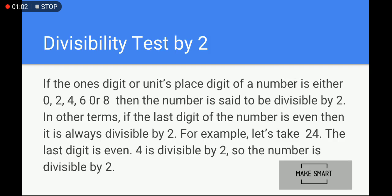First, we will test divisibility by two. If the unit place digit of a number is either 0, 2, 4, 6, or 8 — meaning all even numbers — and the unit place digit is even, then the number is divisible by 2. In other words, if the last digit of the number is even, it is always divisible by 2. For example, take 24: the last digit is 4, which is even, so 24 is divisible by 2. 24 divided by 2 equals 12. Similarly, any number whose unit place is 0, 2, 4, 6, or 8 is divisible by 2.